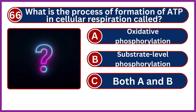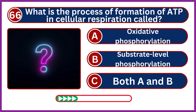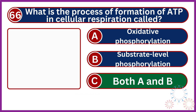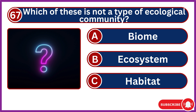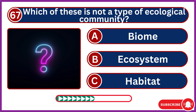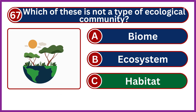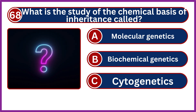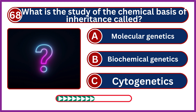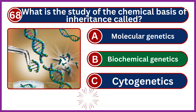What is the process of formation of ATP in cellular respiration called? Both A and B. Which of these is not a type of ecological community? Inheritance. What is the study of the chemical basis of inheritance called? Biochemical genetics.